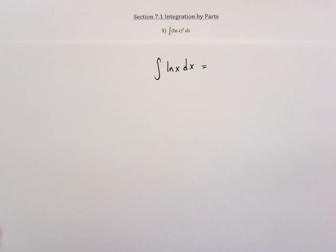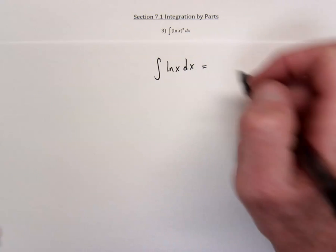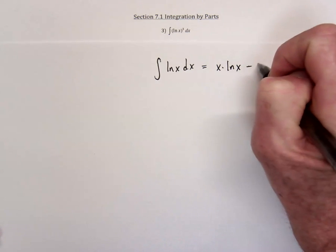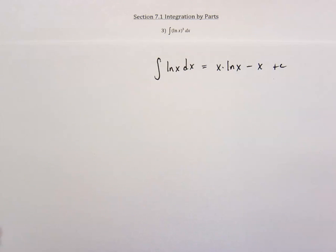Once you've done it once or perhaps twice by integration by parts, this is one that you really just need to remember. So the integral of natural log of x is x ln(x) minus x plus a constant if needed.